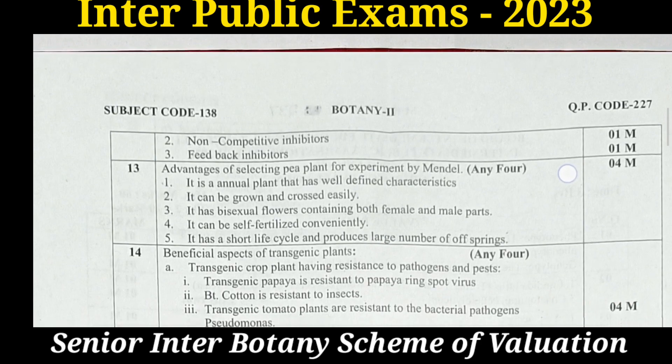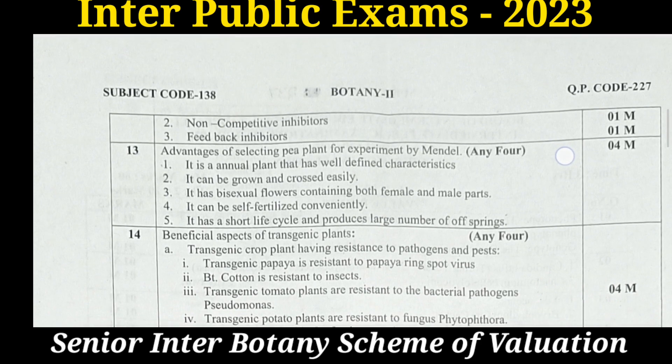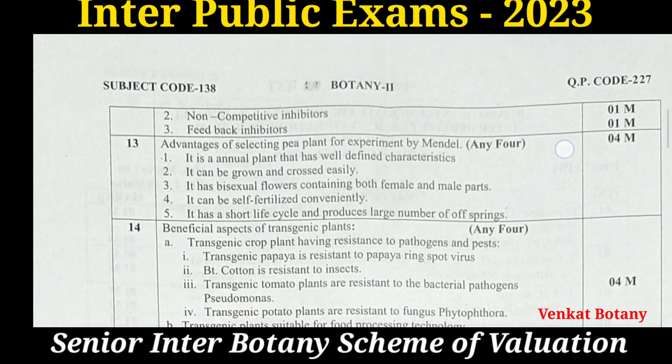Question 13: Mention the advantages of selecting pea plants for experiments by Mendel. There are five advantages. Any four of these five will give the correct answer for this question.